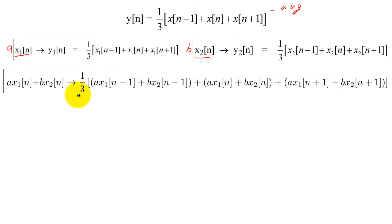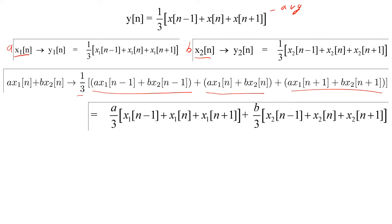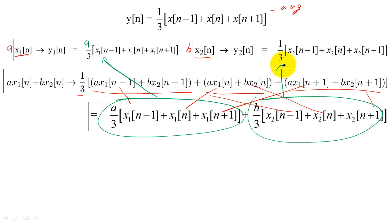Notice that everything has been scaled by a third, and the inputs that enter the system at the same time, n minus 1, n, and n plus 1, are grouped together. If we rearrange the output, we can group the x sub 1 terms together and the x sub 2 terms together. Once we rearrange, it is easy to see that the left side is equal to a times y sub 1 of n, and the right side equals b times y sub 2 of n. Linearity holds for this system.